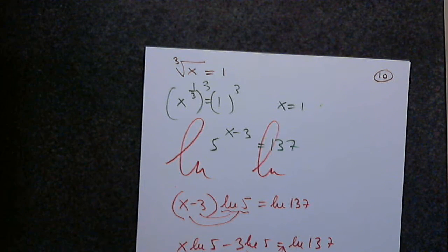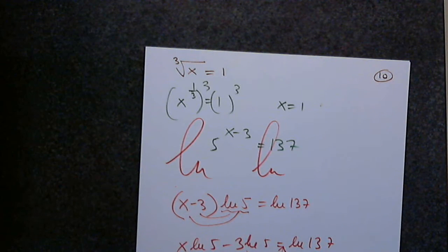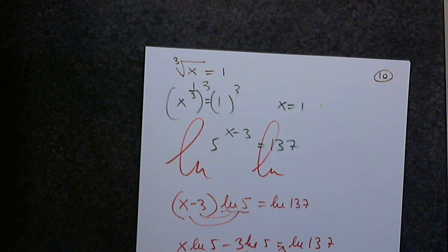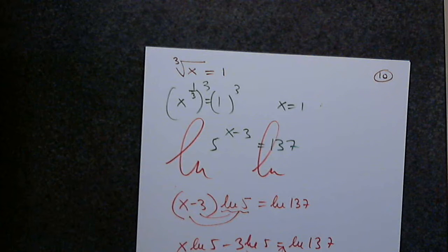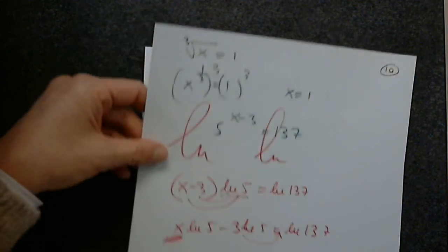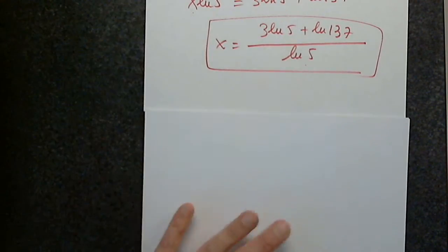That's how we solve exponential equations in which the two sides cannot be presented with the same base — we apply the inverse function, and the inverse function is the log. Remember: you cannot apply natural log to one side and common log to the other. Apply log to both sides or natural log to both sides — once you are consistent.